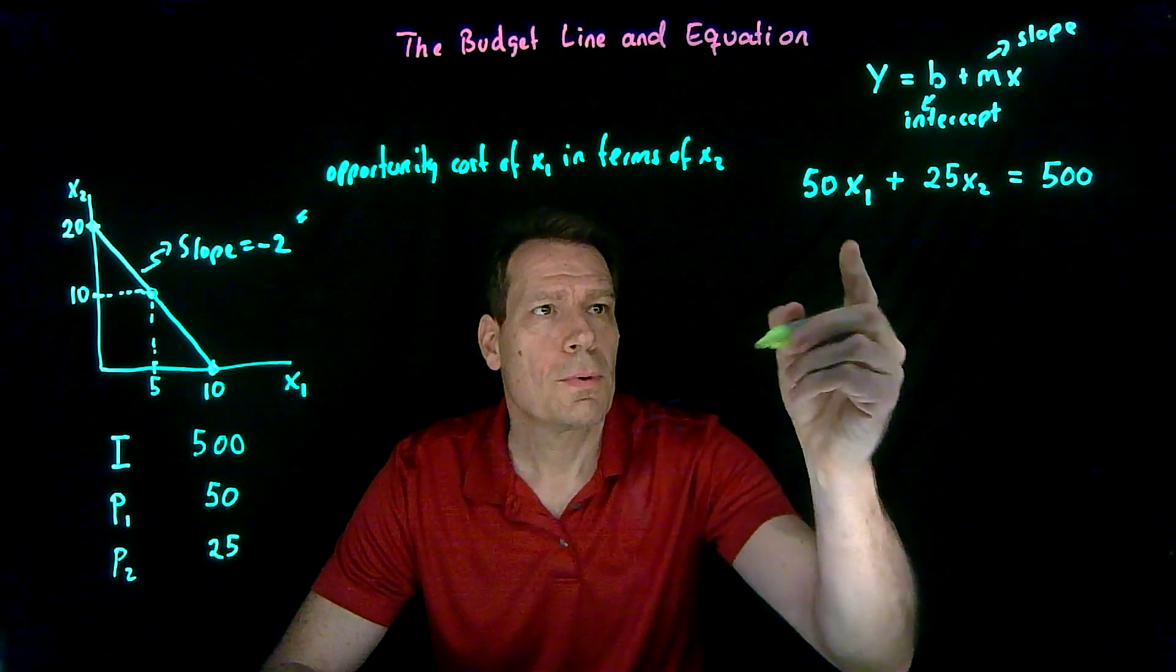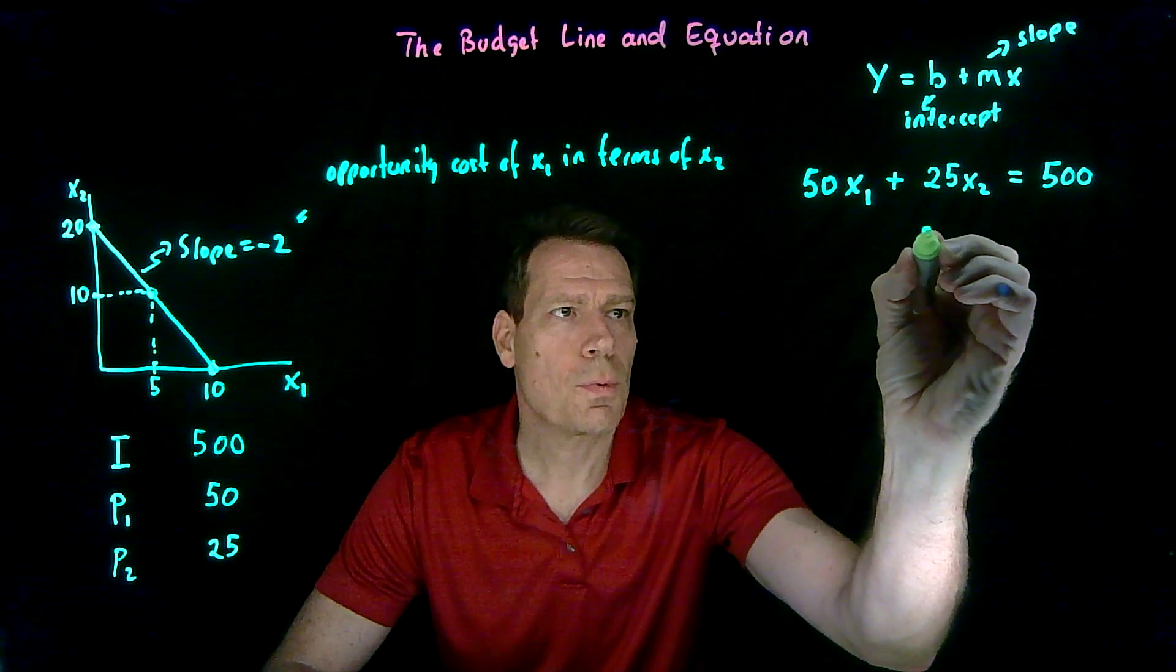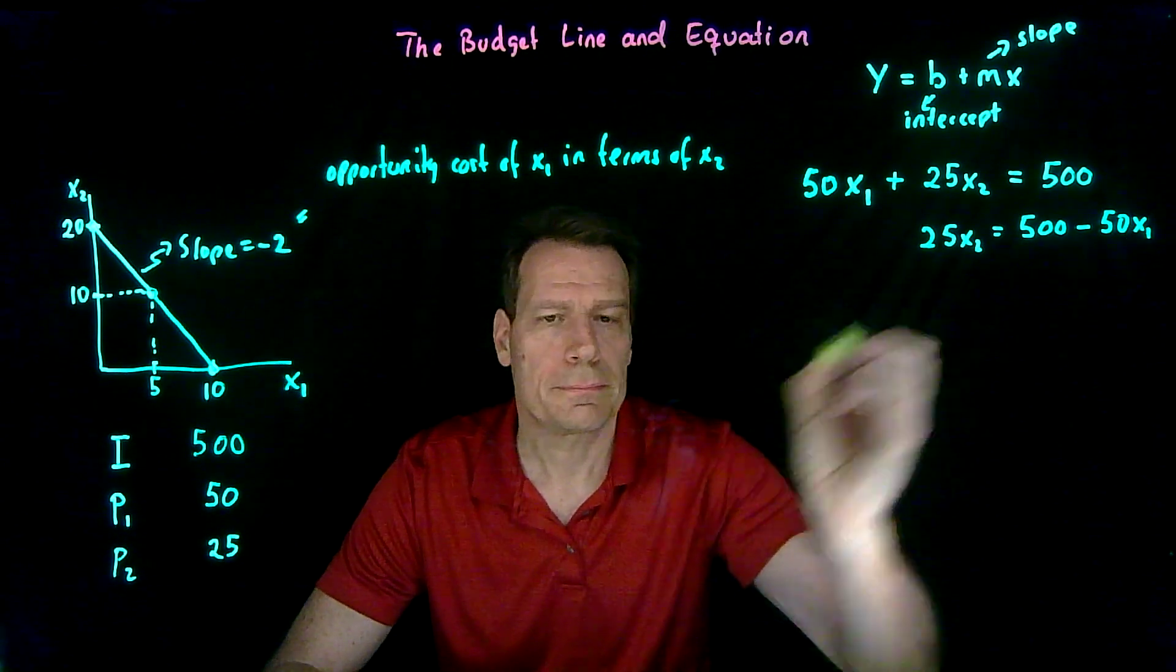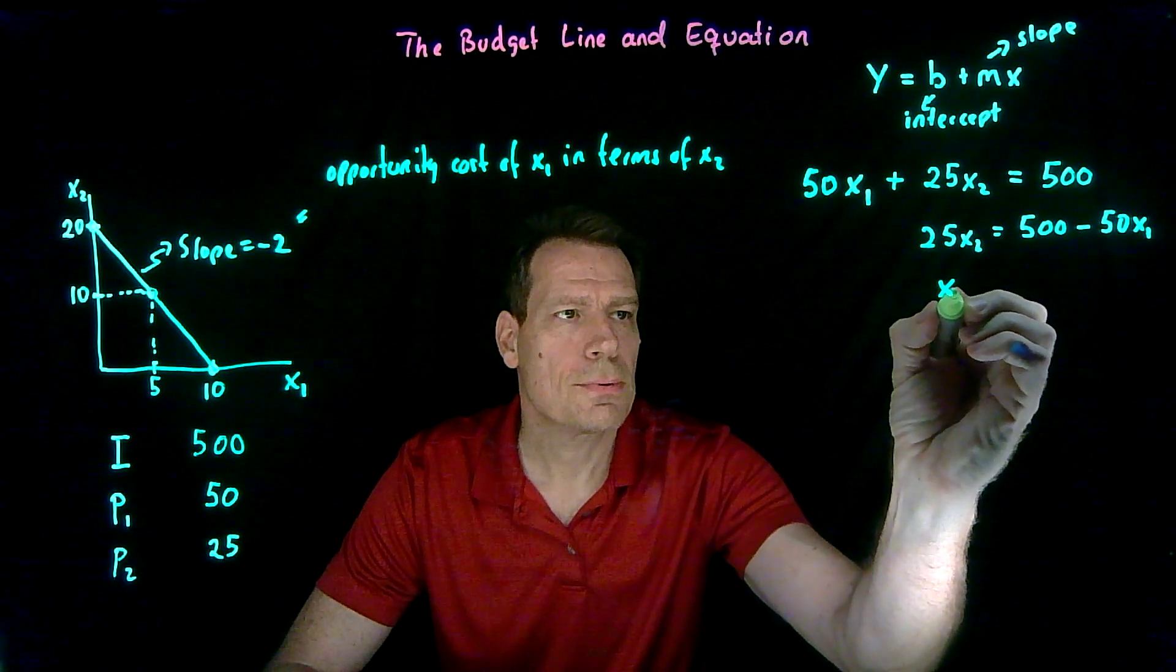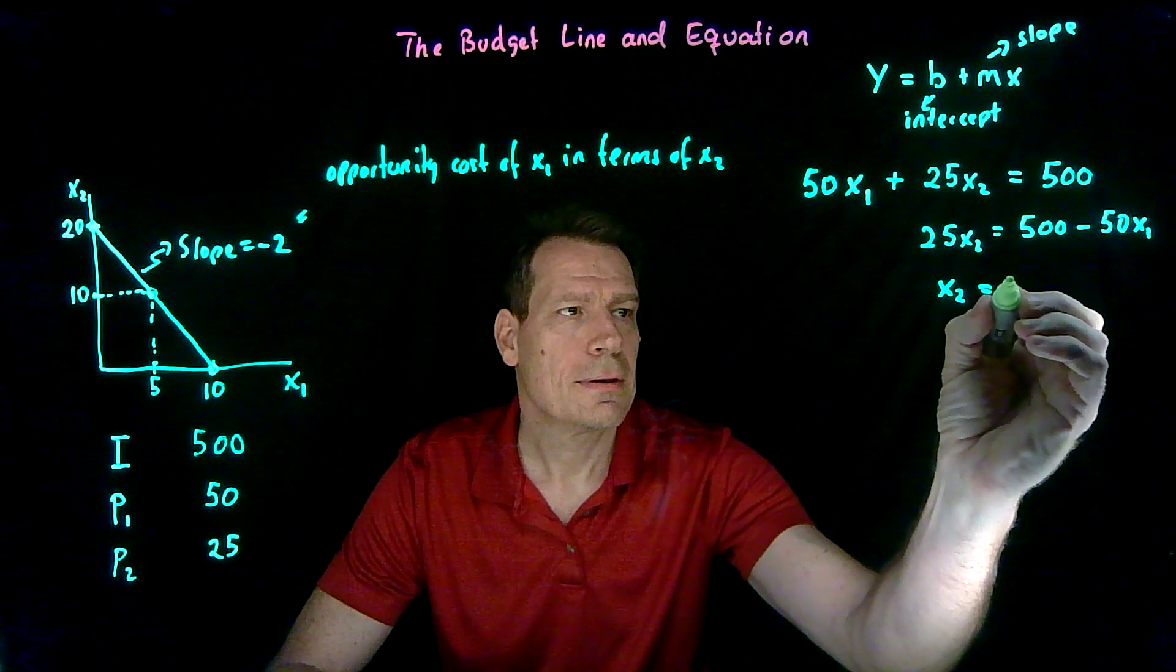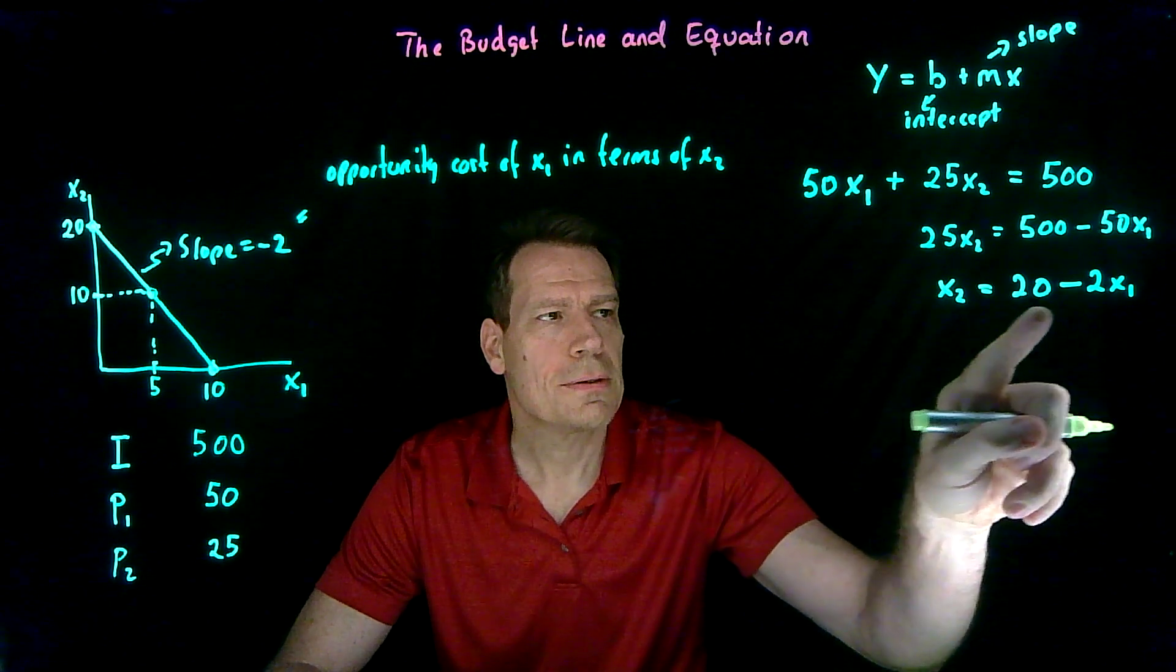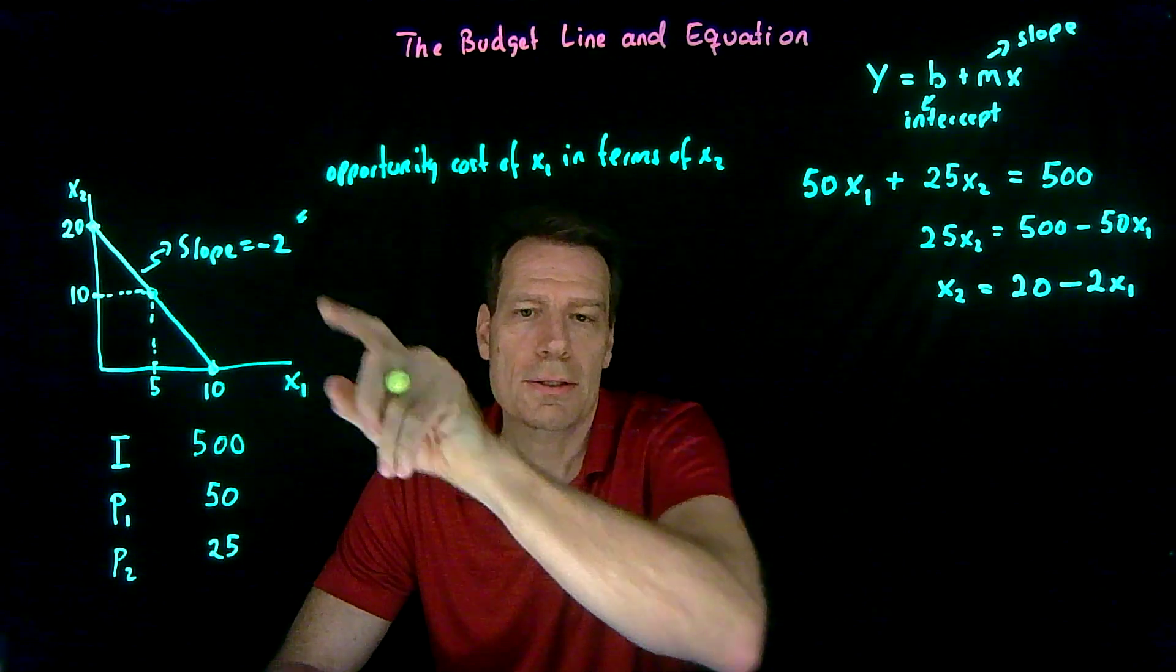So let's go ahead and do that. We want to subtract 50 times x1 from both sides to get rid of it on this side. So we'd be left over with 25x2 equal to 500 minus 50 times x1. Then we want to get rid of the 25 so we divide both sides by 25. That'll give us x2 on this side just like the y here equal to 500 divided by 25, well that's 20, minus 50 divided by 25, well that's 2 times x1. So now we have the equation of a line where this is the intercept and this is the slope and it's exactly what we graphed here, an intercept of 20 and a slope of minus 2.